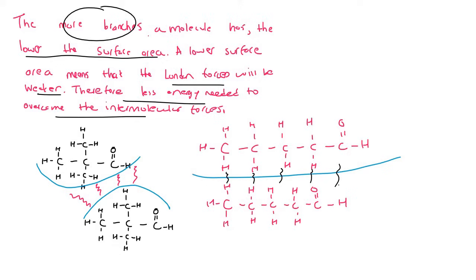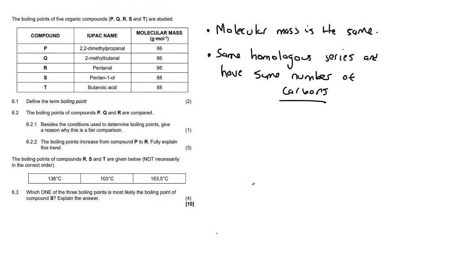So in general, more branches equals lower boiling point. Okay, so the answer that you would have given would be this one over here. Hope that that makes sense, guys. And then just one more thing for that question. Q would be somewhere in between. So Q would have a higher boiling point than P but not as high as R.